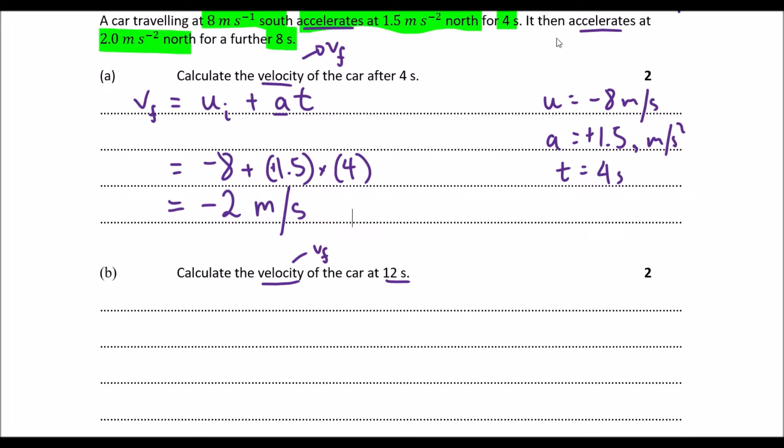So instead of using the values we have here, we're going to use the data that we have here. So the actual time to get to that 12 seconds, that final velocity, we're going to count for that 8 second period of time, instead of counting this 12 in total, because it's two separate accelerations.